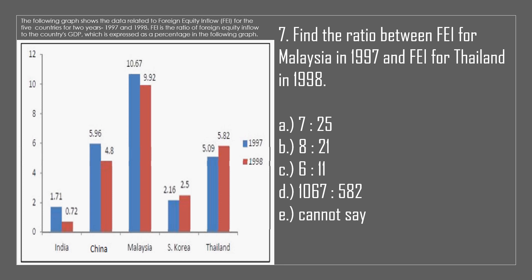The following graph shows data related to foreign equity inflow (FEI) for five countries for two years, 1997 and 1998. FEI is the ratio of foreign equity inflow to the country's GDP, expressed as a percentage in the following graph.